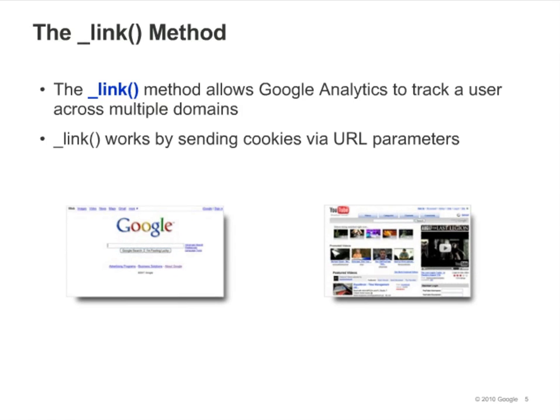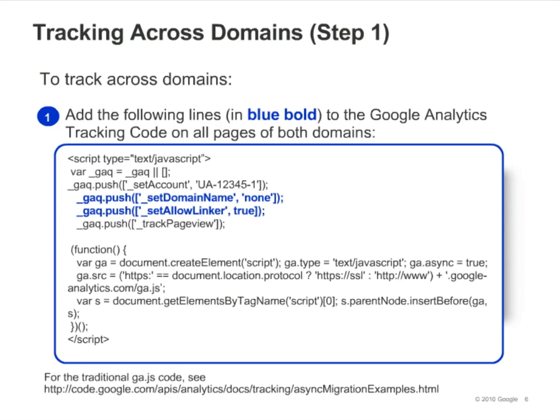By calling the link method, you can send this cookie information across domains. This allows Google Analytics to track a user across multiple domains by sending cookies via URL parameters. To track across domains, you'll need to follow two steps. First, add a few lines to the Google Analytics tracking code on all pages of each site. The lines you need to add are shown here in blue: call setDomainName with an argument of none, and call setAllowLinker with an argument of true.